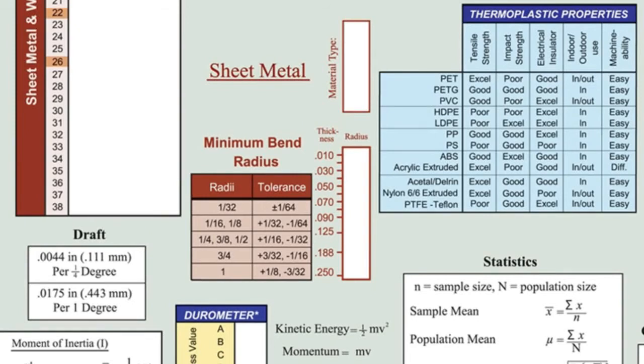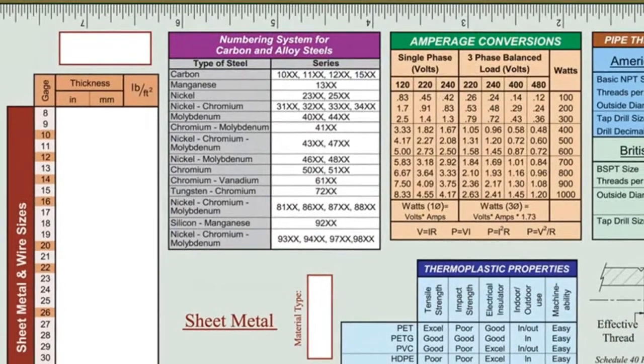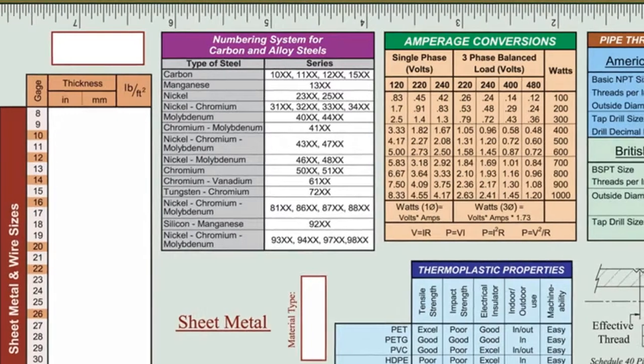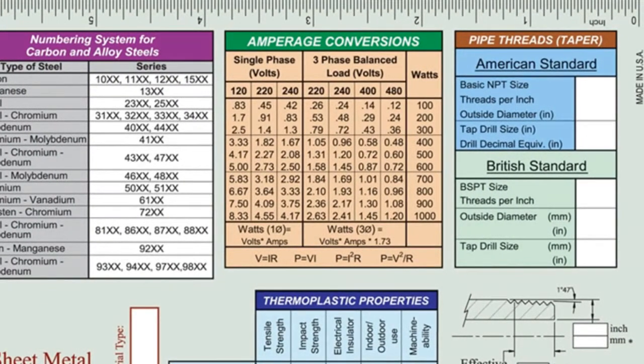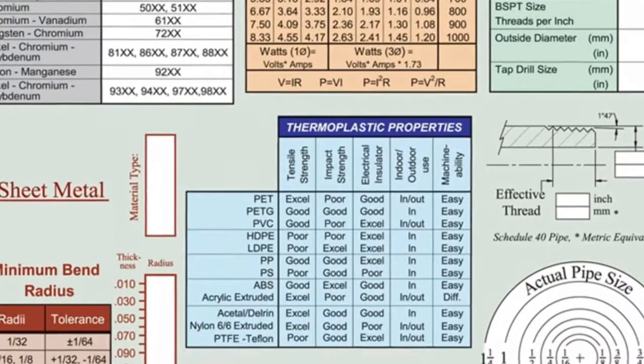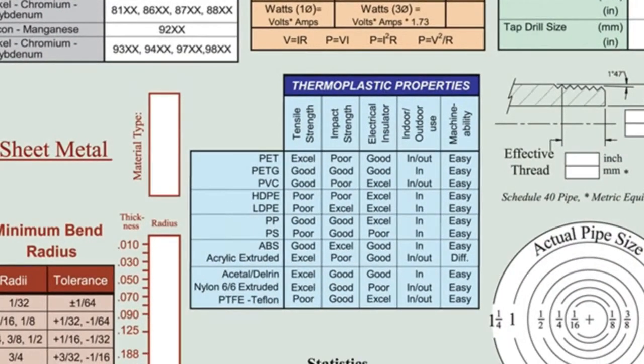A table with a numbering system for carbon and alloy steels is also included. Tables in the upper right list pipe threads for American and British standards, an amperage conversion chart that includes common electrical formulas, and a reference for thermoplastic properties of common plastics and characteristics of each.